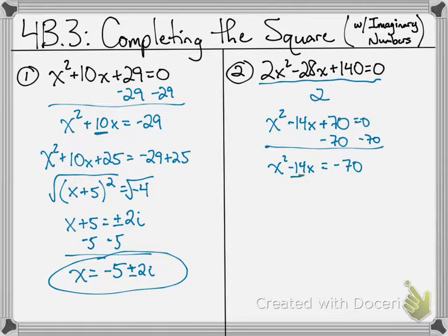Now, I take a look at the b term, which is negative 14, cut it in half, makes it negative 7, square it, becomes positive 49. I'm going to add that 49 to each side of the problem.